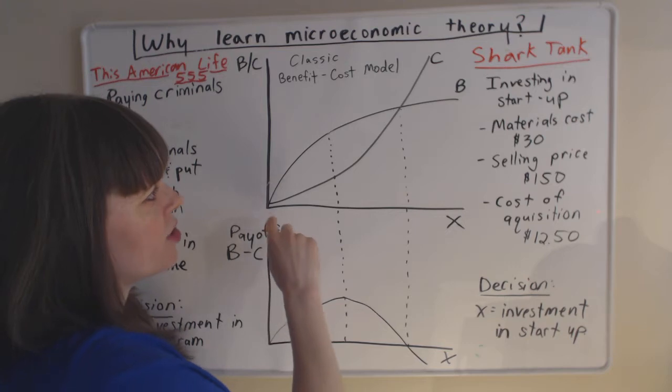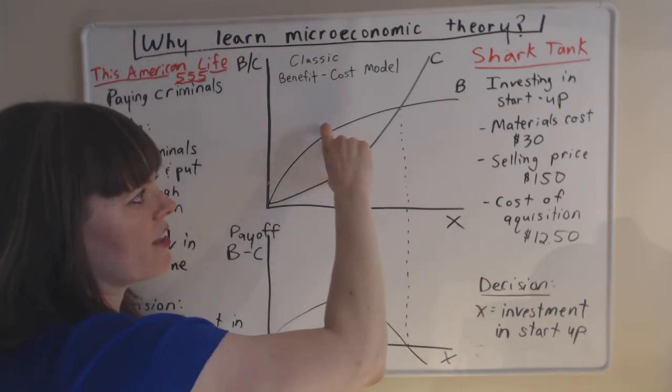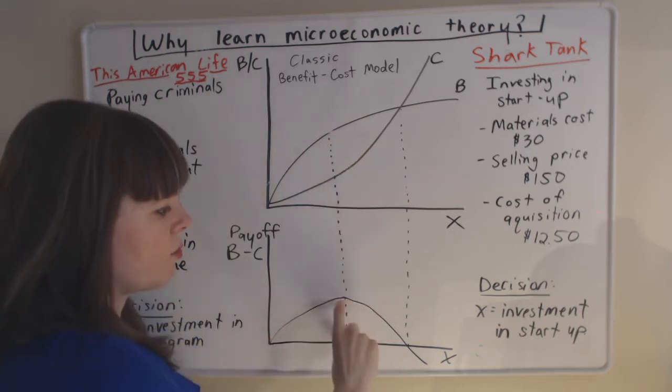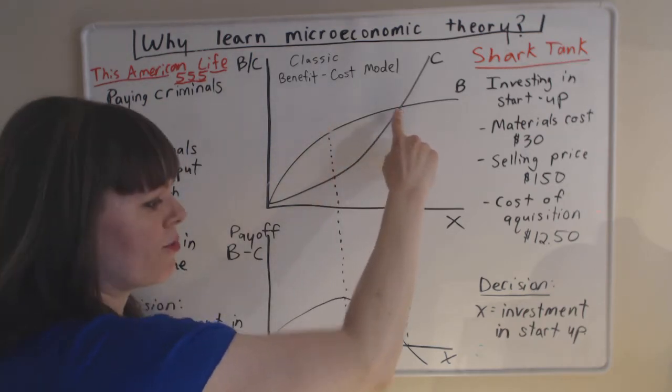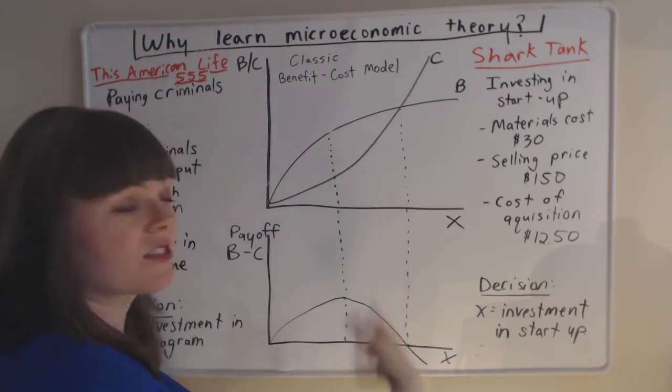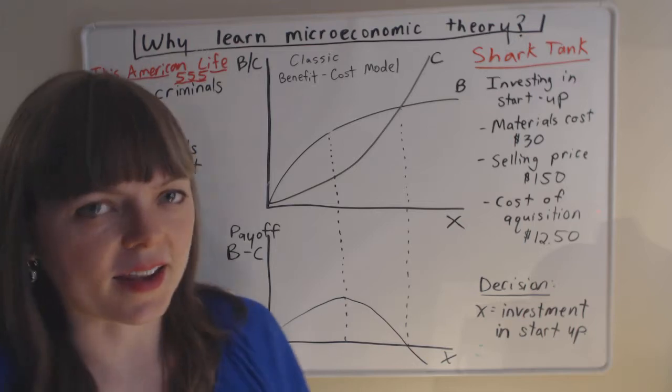And just to remind you, if we're going to maximize benefit minus cost, we want to be at the largest bulge in this model, which happens about here. If we reach this point, our benefit minus cost is going to be zero. So this is the basic framework in economic theory.